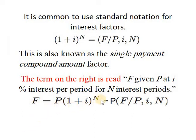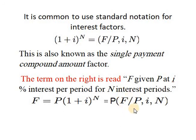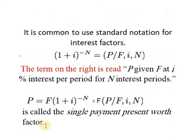In the equation F equals P times (1+i)^n, the factor (1+i)^n can be replaced with the notation (F/P, i, n) — the single payment compound amount factor, read as F given P. This means I'm calculating F knowing the present value. Similarly, when calculating P, the factor (1+i)^(−n) is replaced with (P/F, i, n), read as P given F — meaning I want to calculate P knowing F.